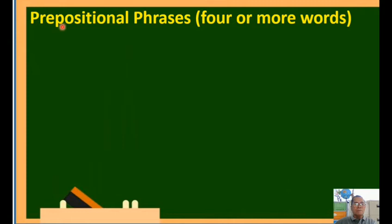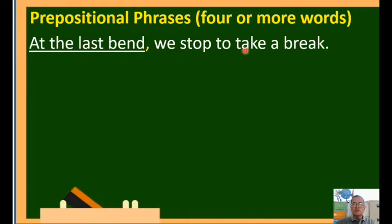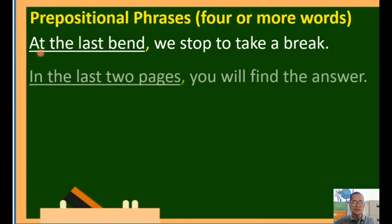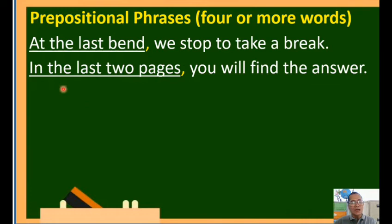For prepositional phrases of four or more words, use a comma. Example: 'At the last bend, we stopped to take a break.' The prepositional phrase is 'at the last bend,' followed by a comma and a space. Another example: 'In the last two pages, you will find the answer.' The prepositional phrase begins with the preposition 'in,' and after the phrase we place a comma, then a space, then the continuation of the sentence.